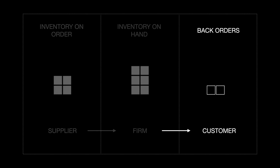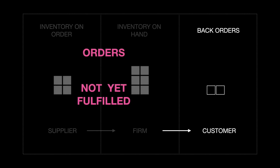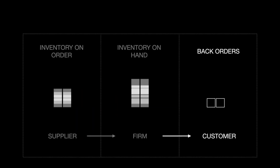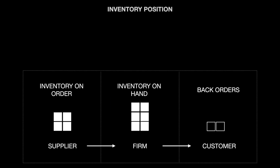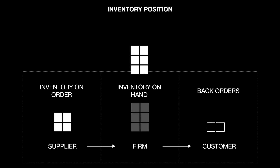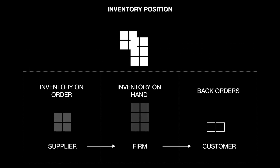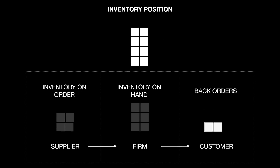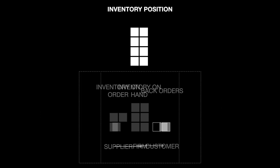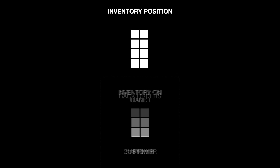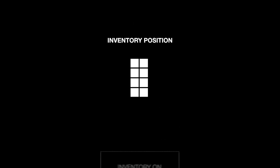Back orders represent orders from a firm's customers that have not yet been fulfilled. So the inventory position is inventory on hand plus inventory on order minus back orders. Taking these three elements together gives you the overall inventory position for a firm.